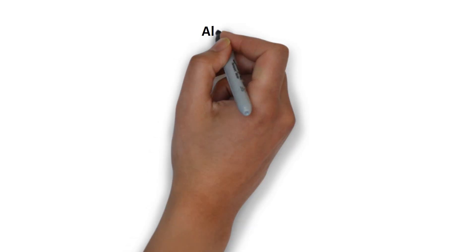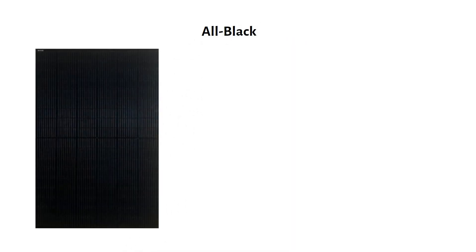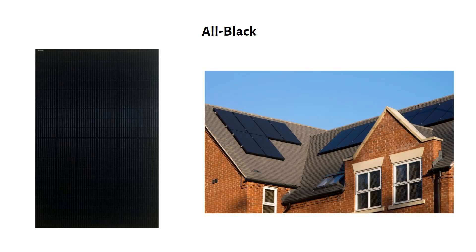Then we have all black solar panels. They look nice, with a black backsheet and black aluminum frame, but they're more expensive due to lower production volumes. Also, black absorbs more heat, which can slightly reduce efficiency.